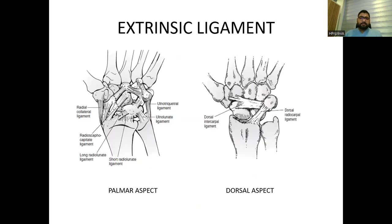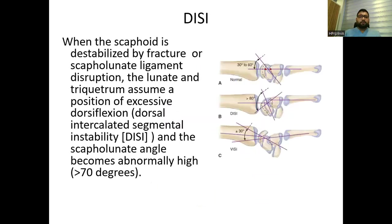This is another illustration showing the extrinsic ligaments from the palmar and dorsal aspect. Again, the three ligaments are very important. This is dorsal intercalated segmental instability (DISI). When the scaphoid is destabilized by fracture or scapholunate ligament disruption, the lunate and triquetrum assume a position of excessive dorsiflexion — known as dorsal intercalated segmental instability — and the scapholunate angle becomes abnormally high.